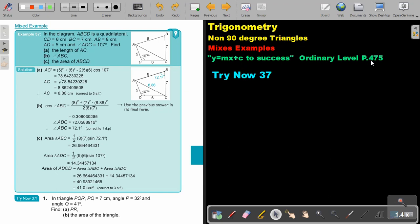You will find this on page 475 in the Namibia Ordinary Level Mathematics textbook Y equals MX plus C to success.